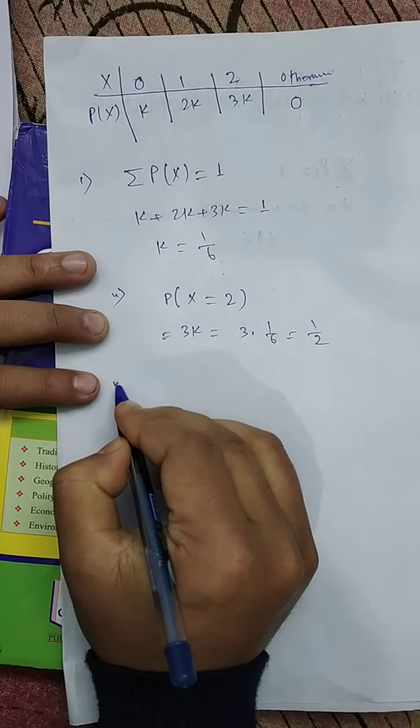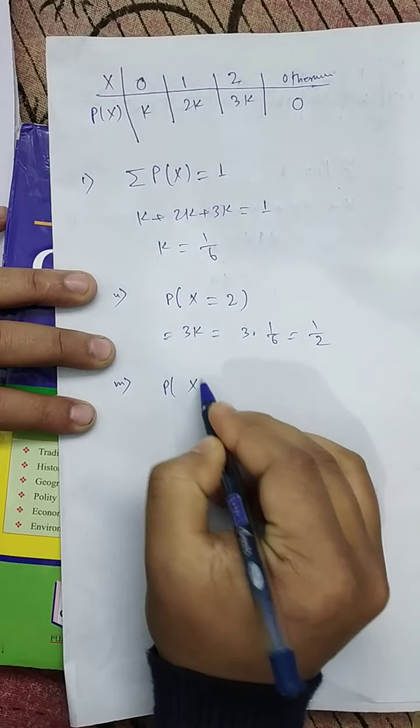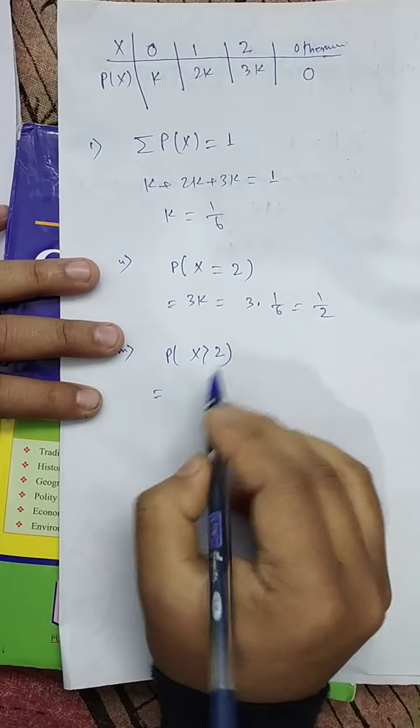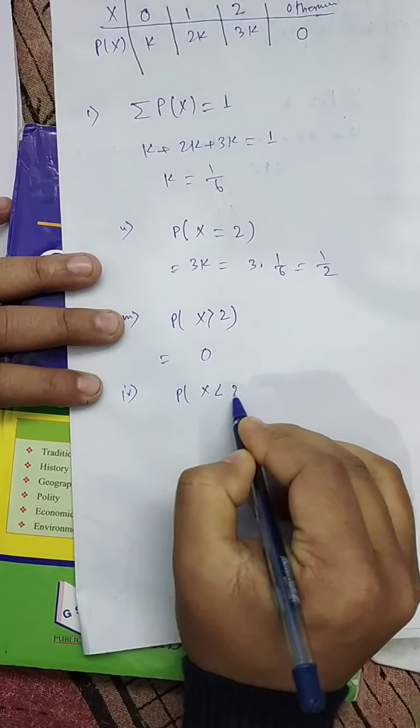For part 3, P(X > 2) = 0. For part 4, P(X < 2):